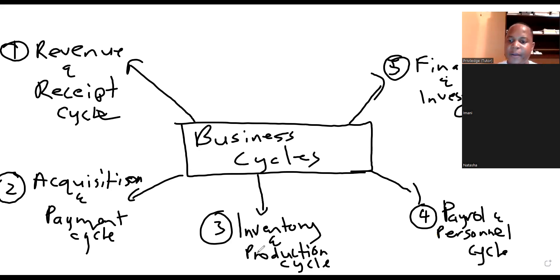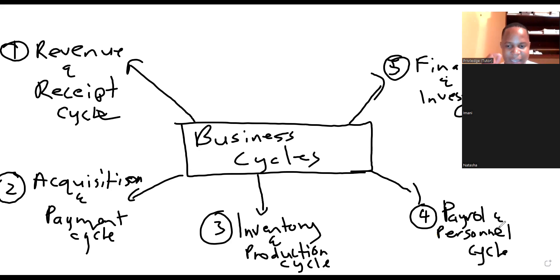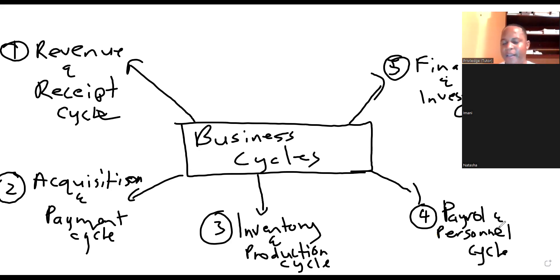The Payroll and Personnel Cycle is a very important cycle — this can be 30 marks in the exam, and it can also carry a lot of marks for assignment purposes. They love testing you on this quite often, so it's important you have a good understanding of how that cycle functions. It has two main objectives: the first part is payroll, which is about ensuring that the company pays the correct salary or wages to employees for actual work done.